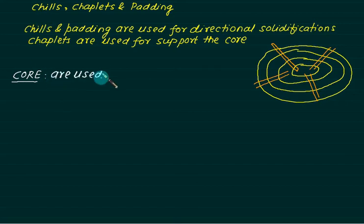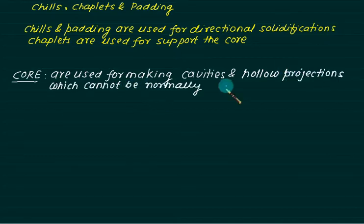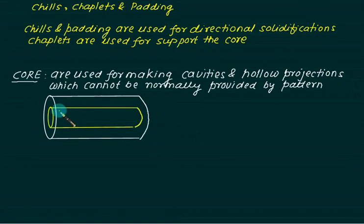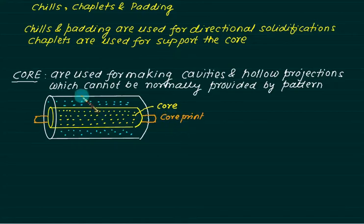Cores are used for making cavities and hollow projections which cannot be normally provided by a pattern. In this case we have a cylinder and we want to make a hollow cylinder. For this we use a core filled with sand, so the molten metal gets filled around it. The extended part of the core is called core print, and sometimes cores are also supported by chaplets.